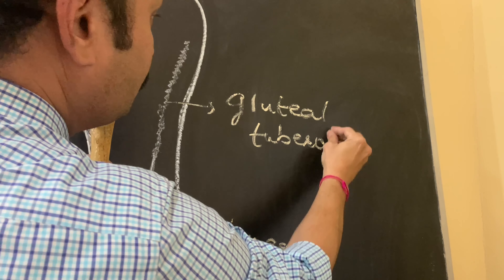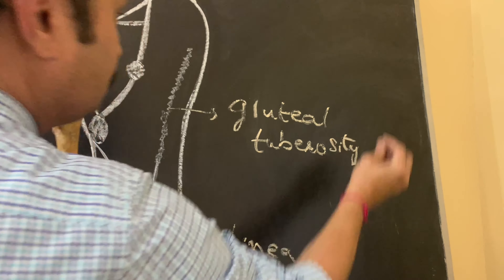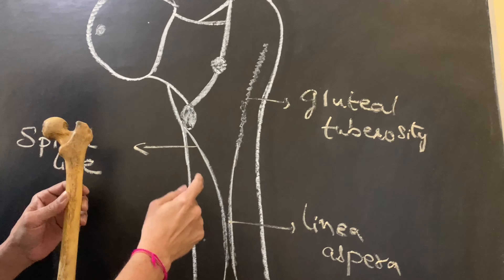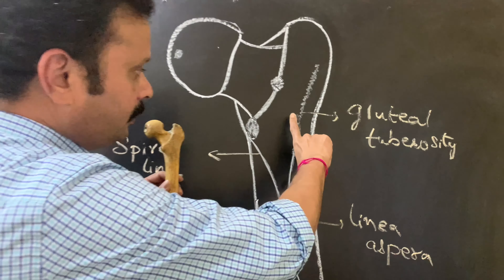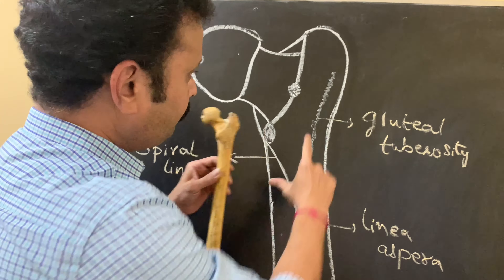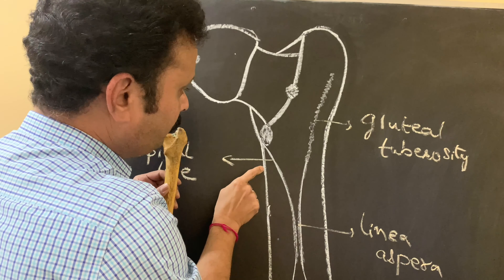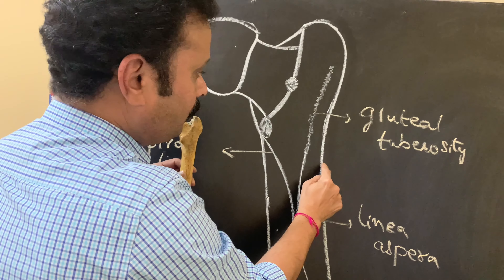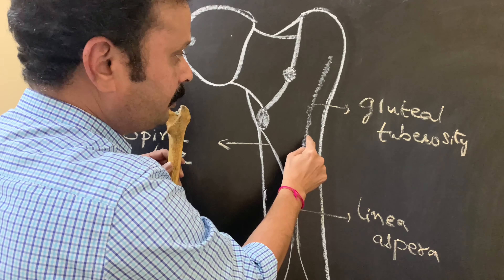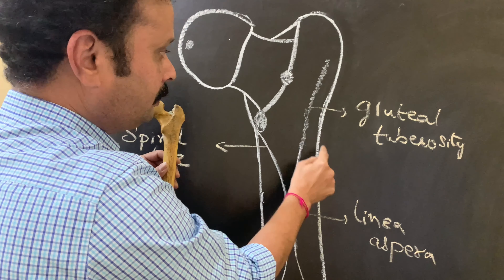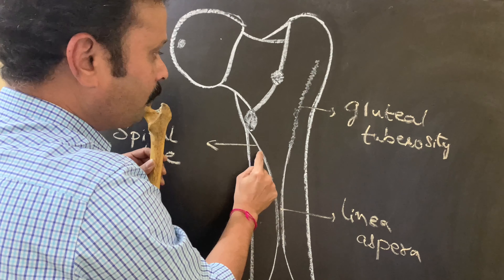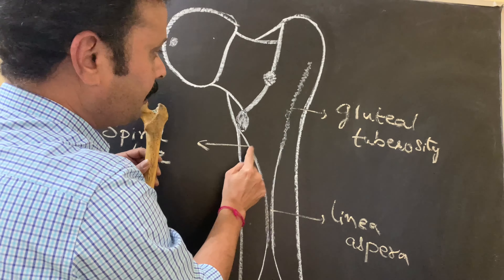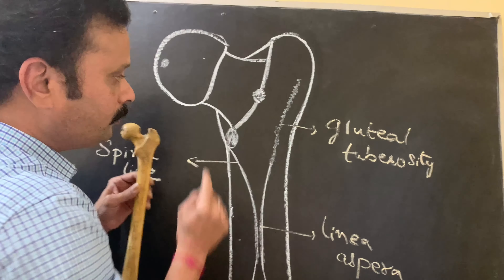Similarly, the lateral lip continues upwards as a roughened part called the gluteal tuberosity. So in the upper one third, from the posterior surface, it has four borders: medial border, lateral border, spiral line, and gluteal tuberosity.